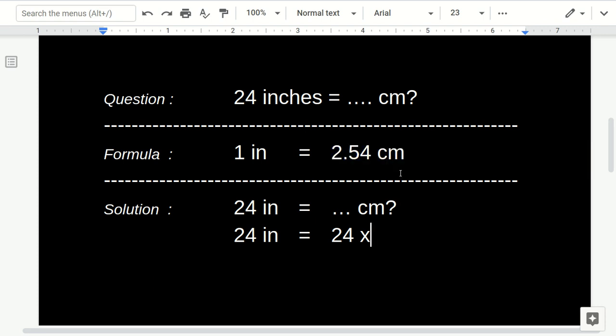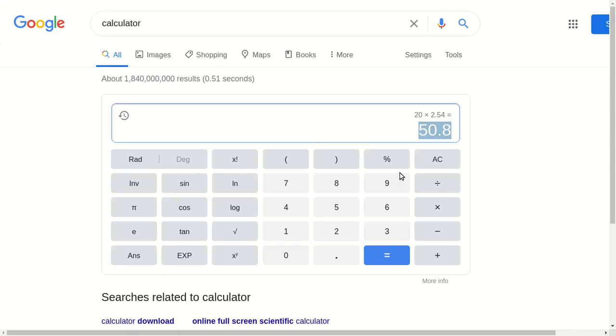24 inches equals 24 times 2.54, which equals 60.96. I'll just copy that and paste here, and that's our answer. Very easy.